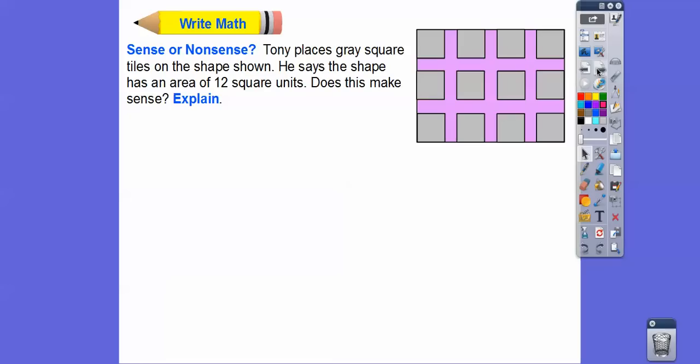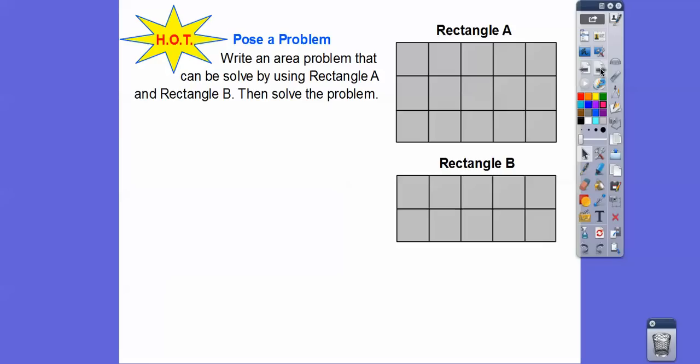So does this make sense or is it nonsense? Tony places gray square tiles on the shape shown. He says that the shape has an area of 12 square units. Does this make sense? Well, there's 12 squares here. Here's 12 squares, but does this whole area have 12 square units? No, it's more than that because you got this empty space in between. So that empty space also has area. So the area is something more than 12 square units right there. Nice and easy.